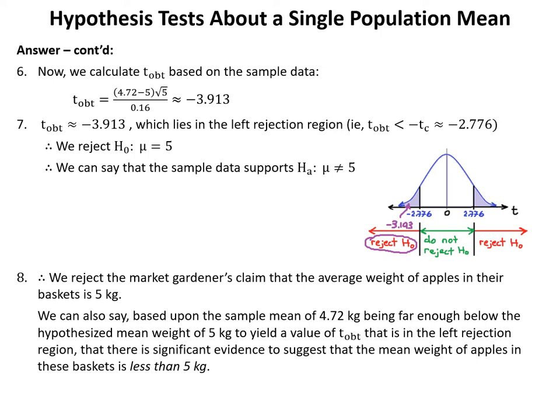When conducting a two-tailed test and rejecting the null hypothesis, it's important to distinguish whether the rejection occurred on the left (lesser) side or right (greater) side, as these represent opposite and extreme situations. In this case the evidence suggests the weight is smaller than hypothesized. In Example 2, we redo Example 1 for alpha = 0.01.